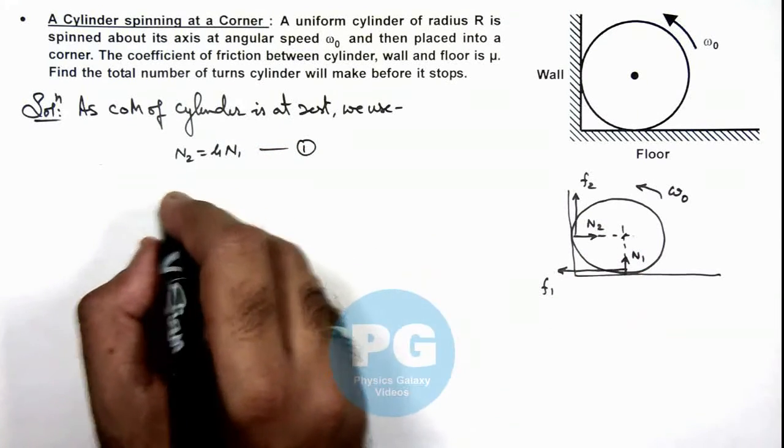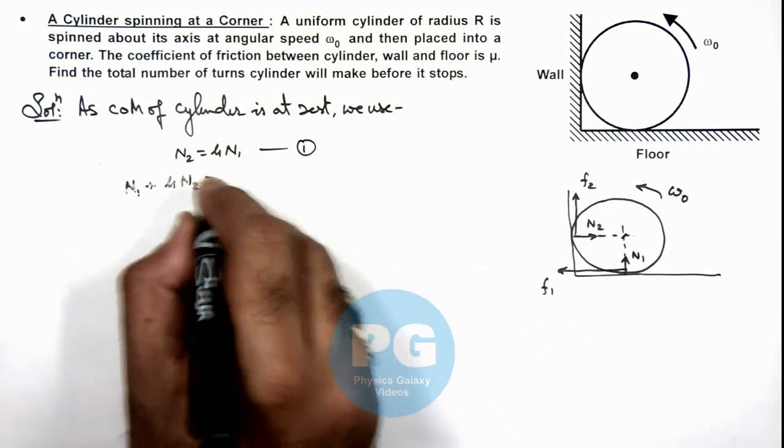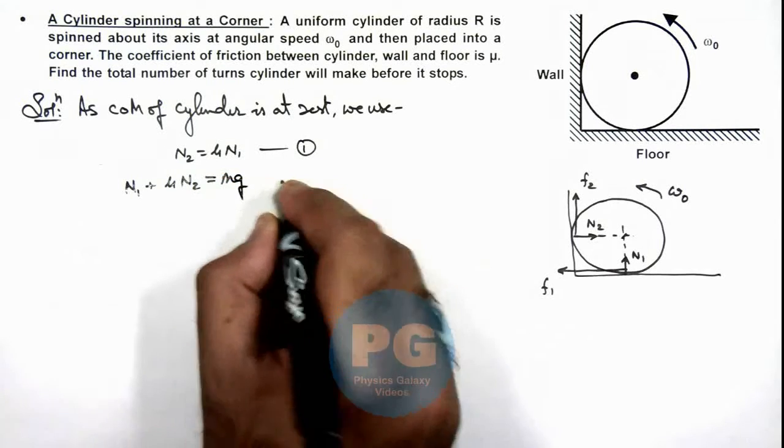And in vertical direction we write n1 plus mu n2 is equal to mg. Say this is our equation 2.